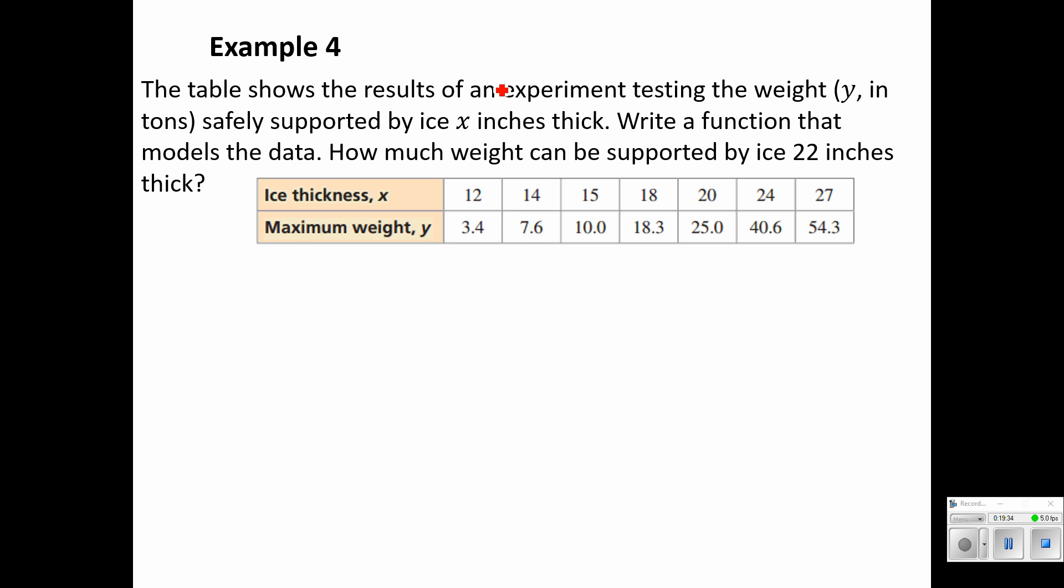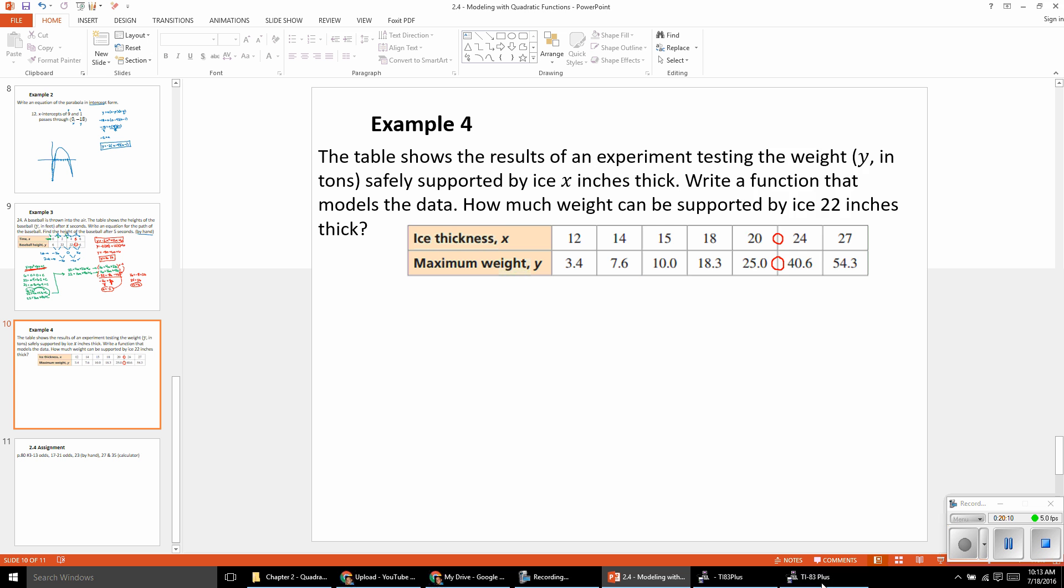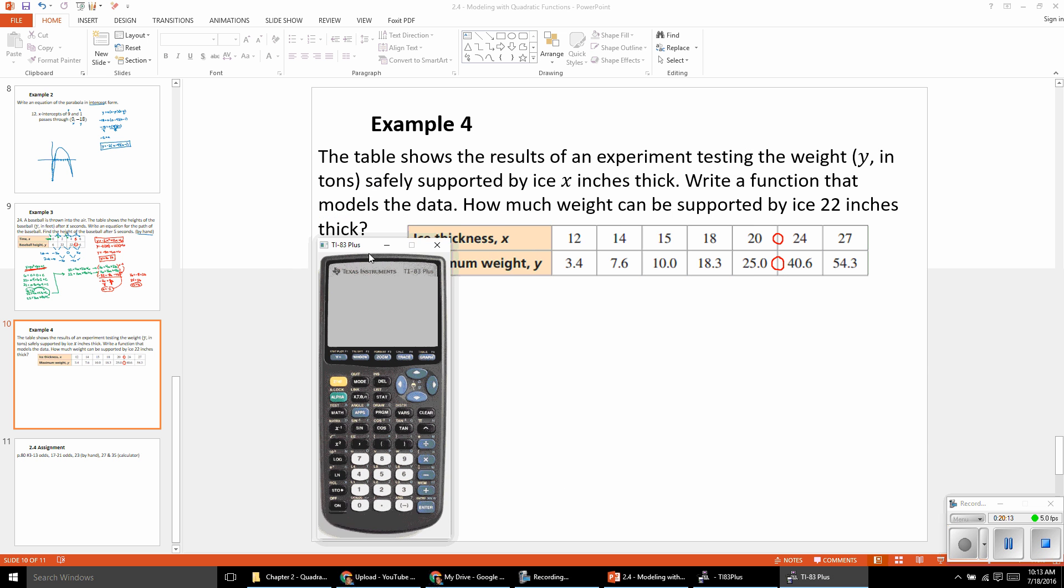And our final example. The table shows the results of an experiment testing the weight in tons that can be safely supported by ice that is x inches thick. Again, we need to write a function that models the data and figure out how much weight can be supported by ice that is 22 inches thick. So we're wanting an input that is somewhere in here. And so we're expecting it to be between 25 and 40.6. That's how we can tell if our function is appropriate. Well, to do this, I'm going to need to pull up the calculator. And we're going to use that quadratic regression.